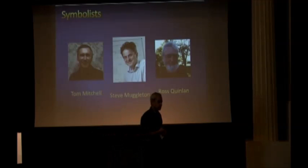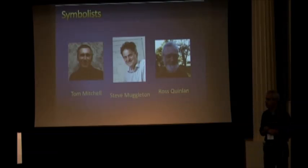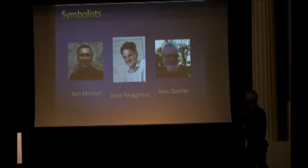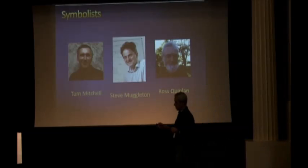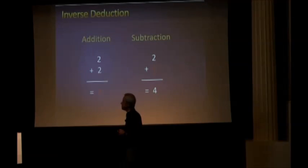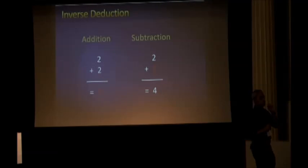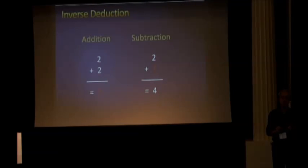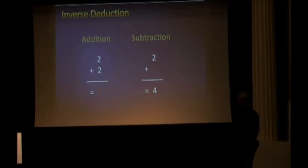Let's start with the symbolists. Some of the most famous symbolists include Tom Mitchell at CMU, Steve Muggleton in the UK, and Ross Quinlan in Australia — it's a very international school. The basic idea of the symbolists is brilliant and very simple. It was first proposed in the 19th century but only became a real algorithm in the 1980s, when Steve Muggleton and others developed it.